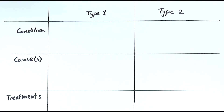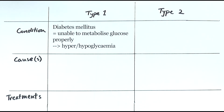In this video, we'll be looking at what diabetes is and comparing the two types of diabetes. Diabetes, sometimes known as diabetes mellitus, is a condition of the body where the person is unable to metabolize carbohydrates or glucose properly.